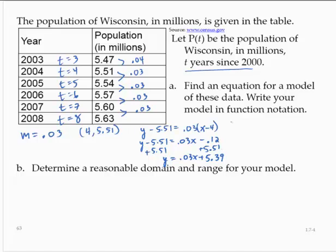But we were asked for the function notation, and we were given specific function notation. It said let P(t) be the population, that's our y, t years since 2000, that's our x. So I would write P(t) equals 0.03t plus 5.39.